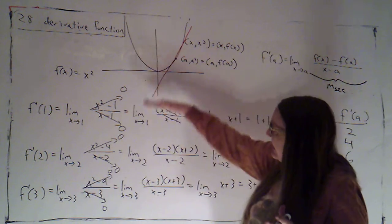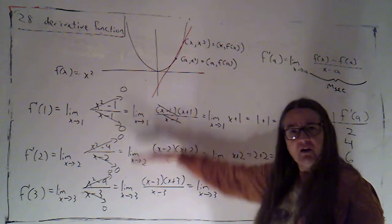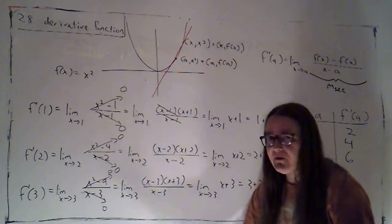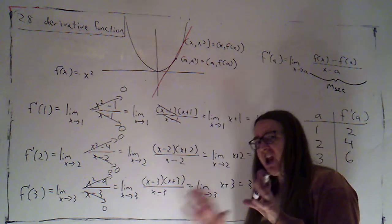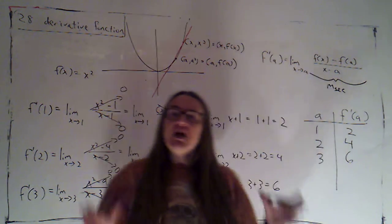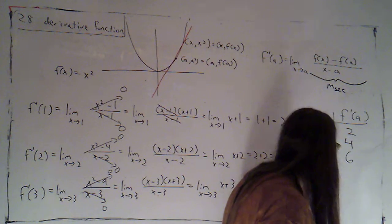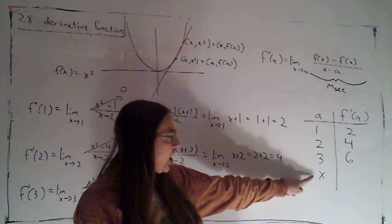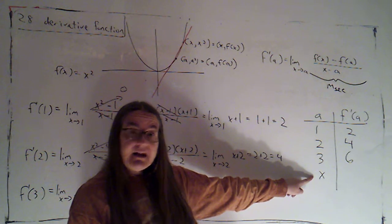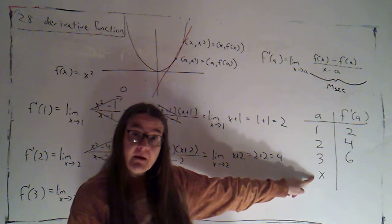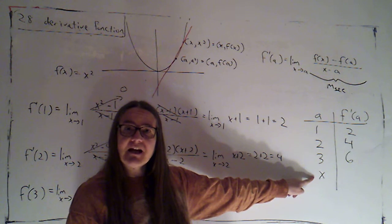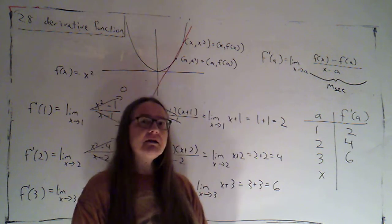So here, the work started to feel kind of redundant. It felt like I was doing the same thing and just changing a few numbers. So it would be really nice if I could come up with a formula for an arbitrary point of tangency. Instead of picking a specific number for the x value of the point of tangency, I'm going to call it x.